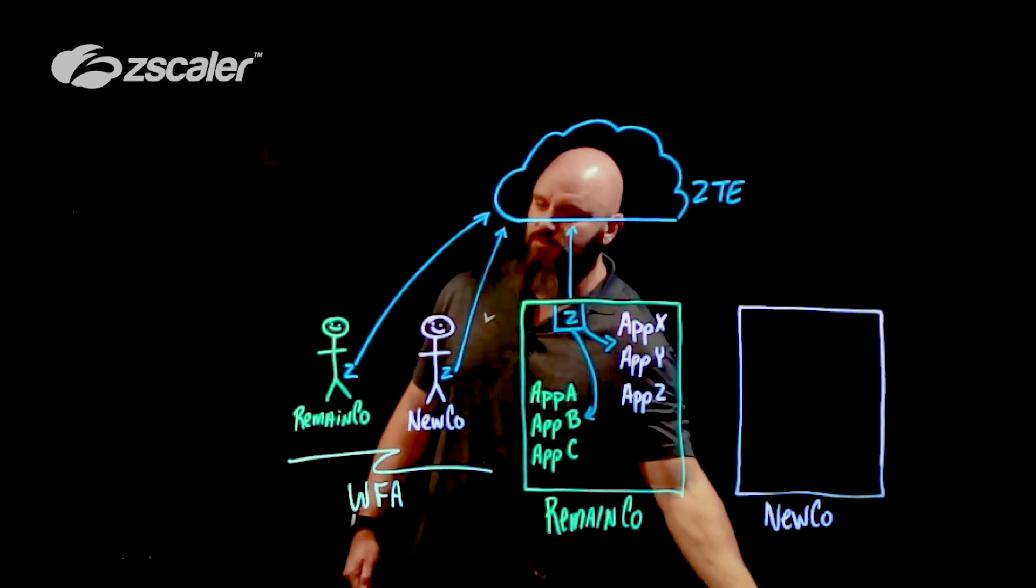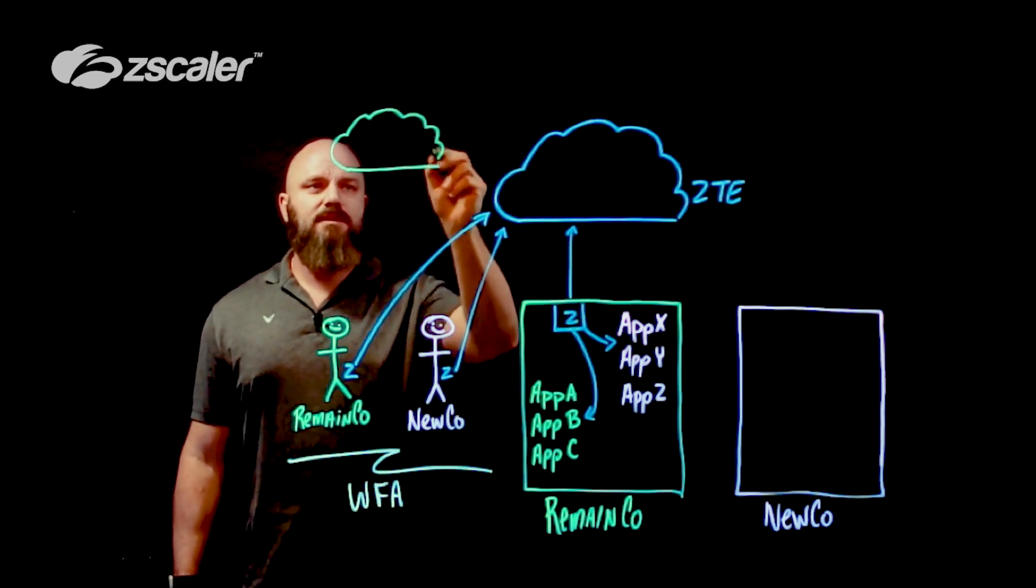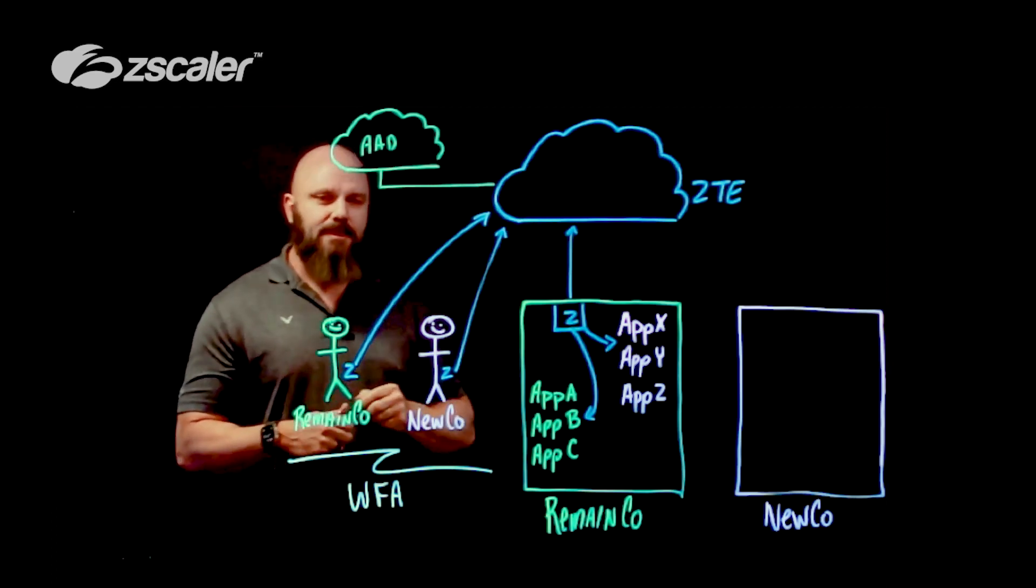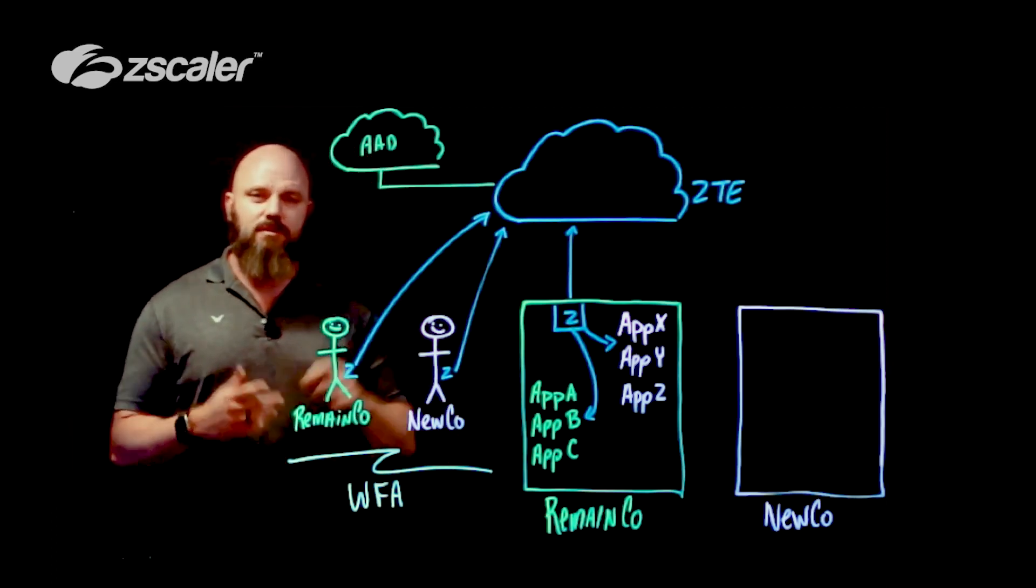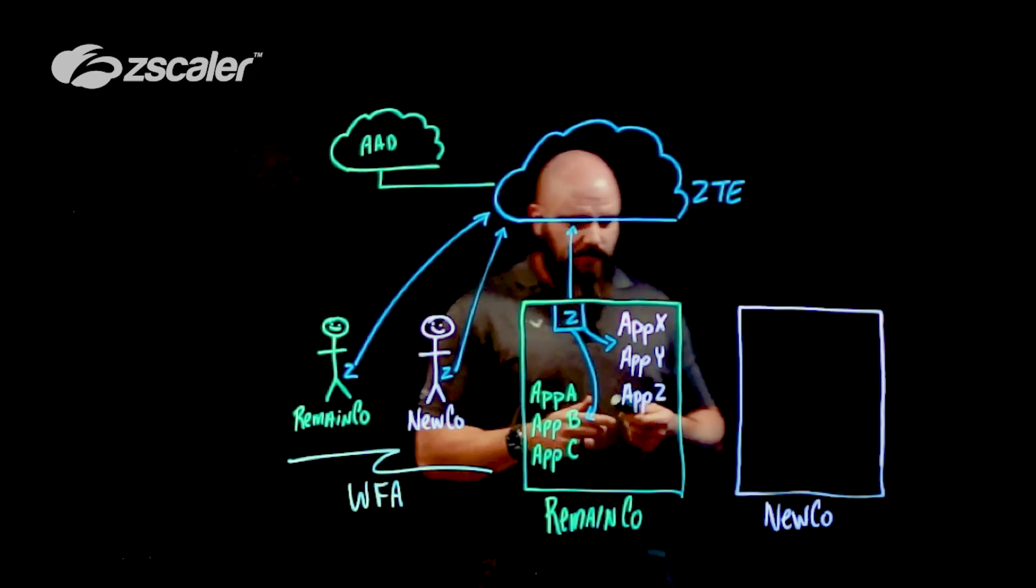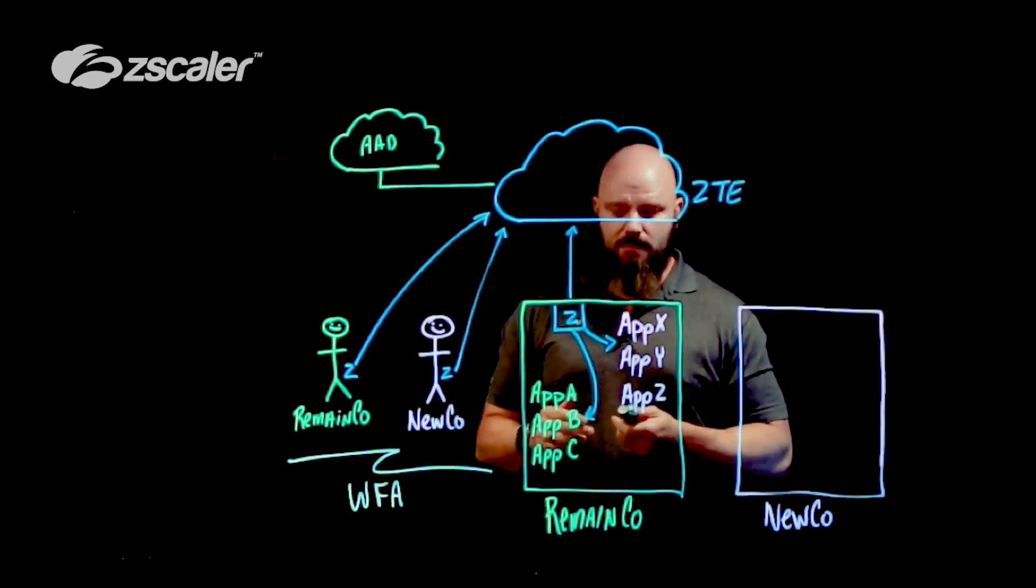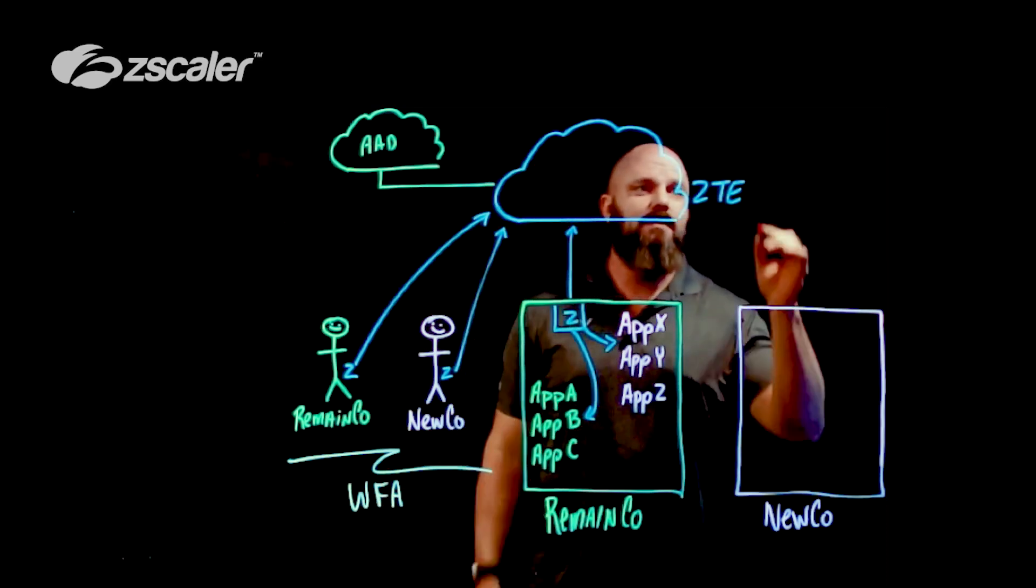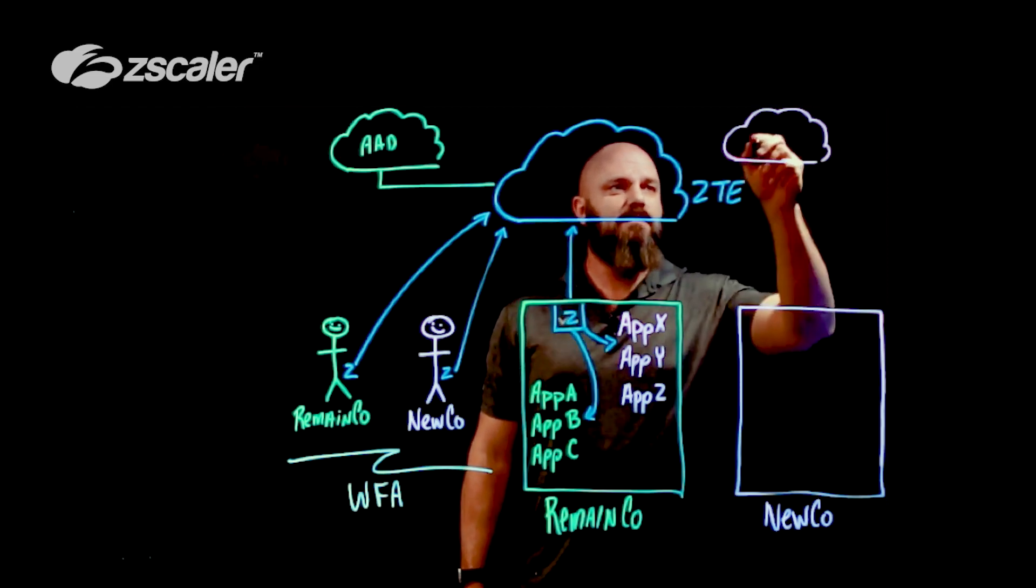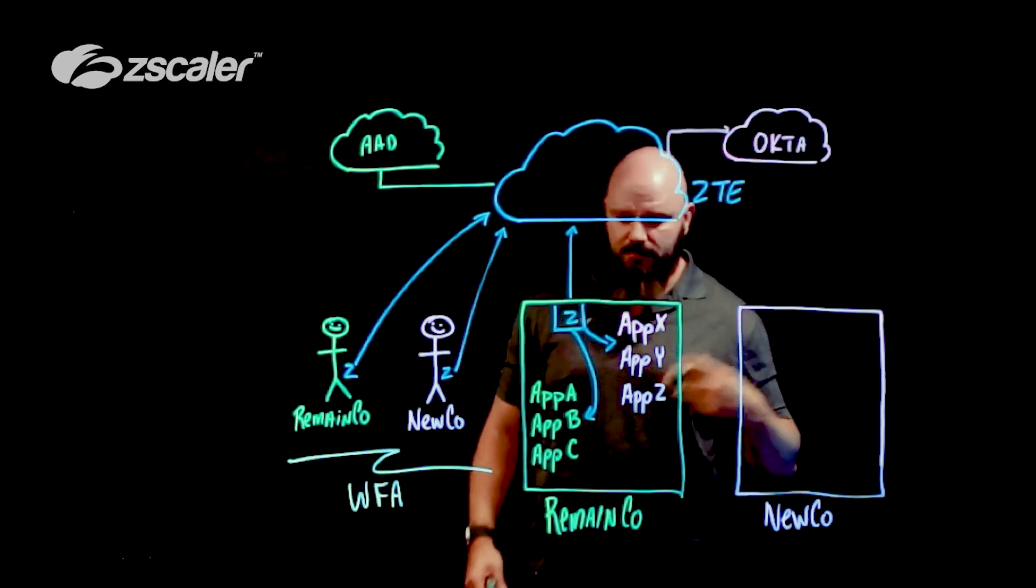But first and foremost, we want to be able to identify users that are coming through. Look at that. We always want to federate identity. So let's say that RemainCo is on Azure Active Directory. Not a problem. We do that SAML-based authentication. That allows us to get very contextualized in our rules. We know who exactly the user is, the group memberships, departments, and locations. And then as we move over here, we can say maybe there's a moment in time where we still leverage Azure Active Directory for NuCo. But in the event that NuCo says, you know what, we don't want to do that, we want to use our own identity provider. That's not a big deal to us at all. So NuCo comes over here and they say, we want to rock with Okta. Not a problem. I can support multiple identity providers and it helps with this transition much quicker.